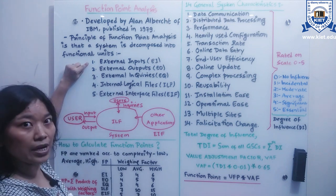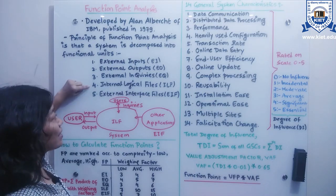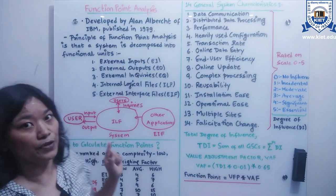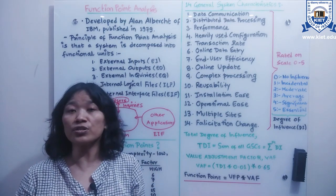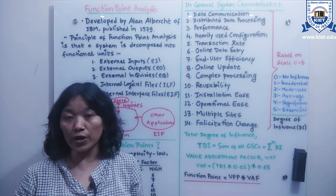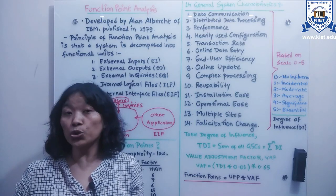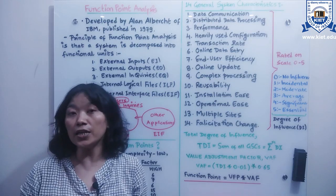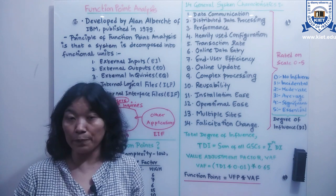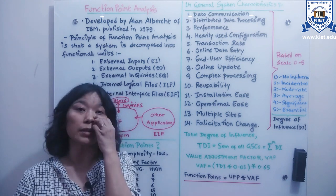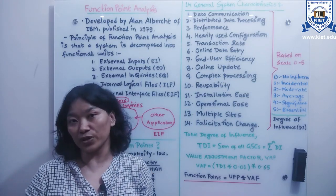The five functional units are: external input, external output, external inquiries, internal logical files, and external interface files. Function point analysis measures the size of the software based on how users use the software system — through its functionality in terms of exchanges, queries, and processing. This is the way we can estimate the size and metrics of the software.